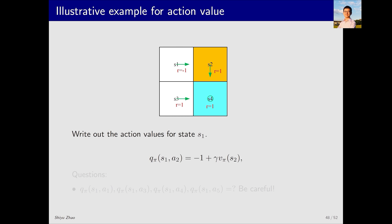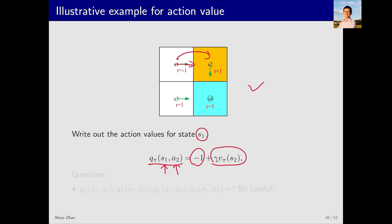There is also a common mistake that we must pay attention to. Consider this example where the policy is indicated by green arrows. Our first task is to write out the action value for s1 according to this policy. At s1, the action to take is to move right, so we calculate the action value after taking action a2 in s1. The first part is the average immediate reward, which is deterministic in this case, resulting in negative 1. The future reward, as it moves to s2, is gamma times v_pi(s2).